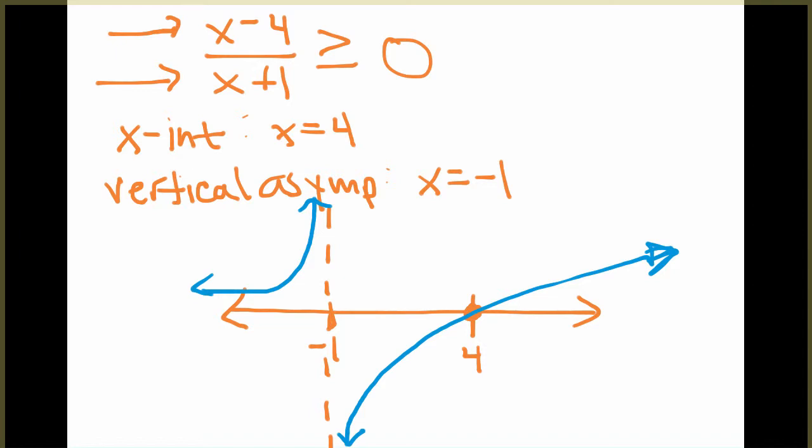From this graph, we want to compare when it is greater than or equal to 0. So greater than or equal to 0 is above the x-axis. So we're thinking of it as if our number line is the x-axis.